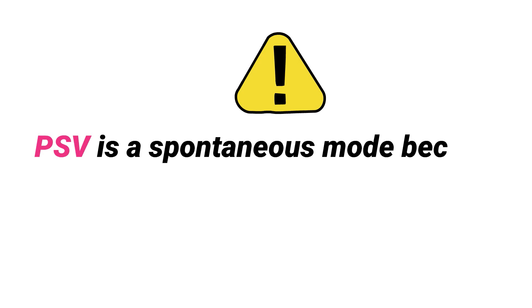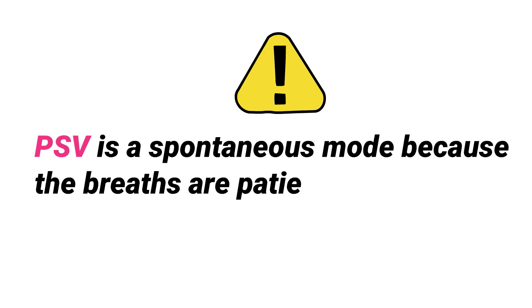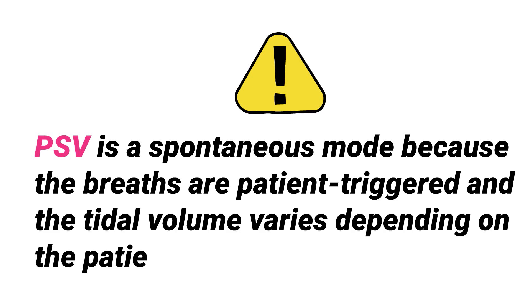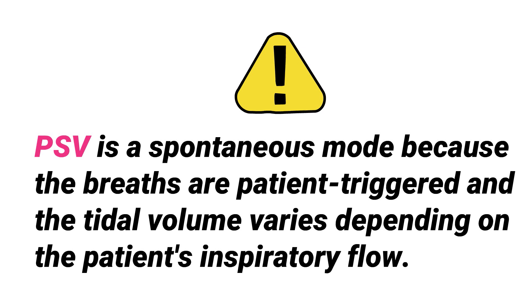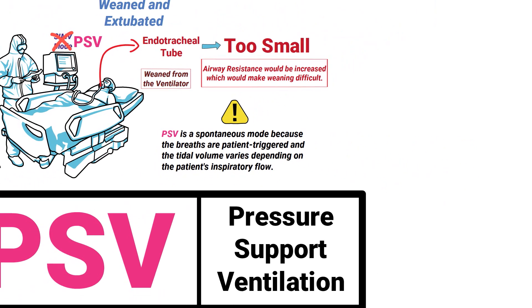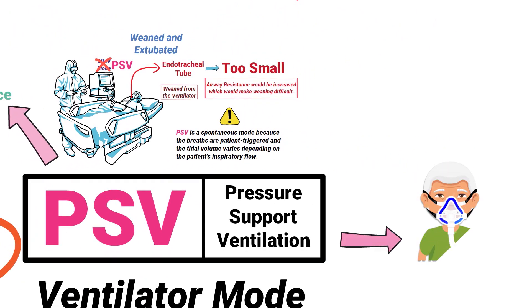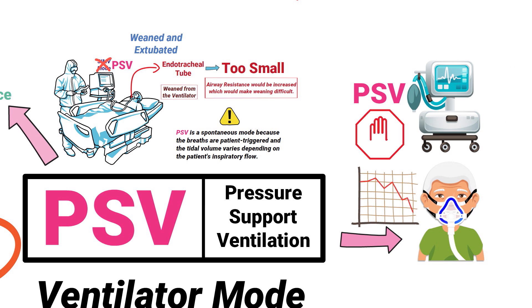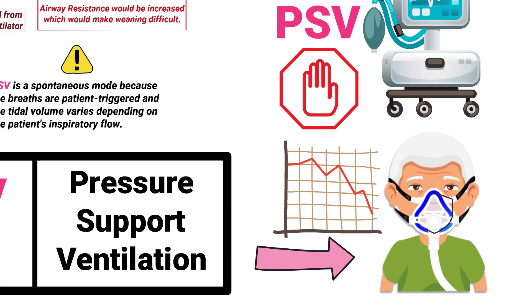Pressure support is a spontaneous mode because the breaths are patient triggered and the tidal volume varies depending on the patient's inspiratory flow. As long as the patient is generating flow for inspiration, pressure support is applied by the ventilator. Whenever the patient's flow demand decreases, pressure support stops and the breath is terminated.